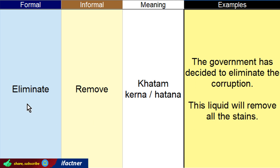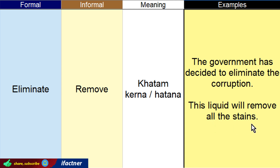Isi tarah doostoon, eliminate aur remove. Dono ka meaning hoota hai khatam kerna, hatana. Lekin eliminate hum formal environment mein use karenge, aur remove ka word hum informal environment mein use kertay hain. Example letay hain: 'The government has decided to eliminate the corruption.' Government nay yeh faisla liya hai ke corruption ko khatam kerna hai. Doosra sentence: 'This liquid will remove all the stains.' Yeh mahlool tamaam daag mita dega. Toh jab meinne formal environment mein baat karni hai toh eliminate ka word use karuun ga, aur informal aam bolchaal ke liye simply remove ka word use karuun ga.